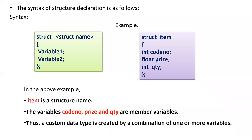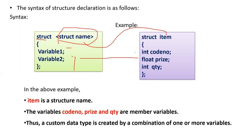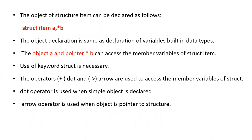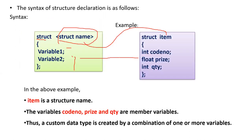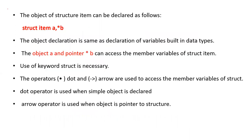The syntax of a structure is as follows: 'struct' is the keyword, followed by an open curly brace. Inside, you declare variables and then close the curly brace, terminated by a semicolon. The struct name here is 'item'. The variables are int, float, and other data types. There is no concept of functions in a structure. Objects can be declared as ordinary objects or pointer objects using the dot operator or the arrow operator to access member variables.